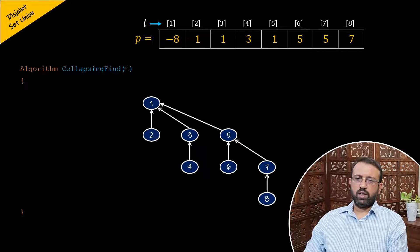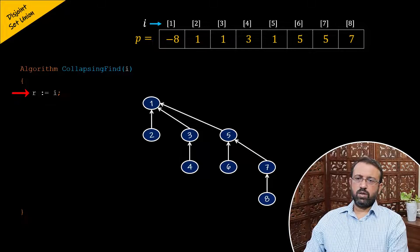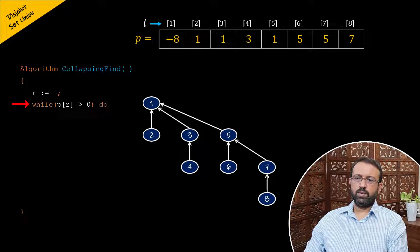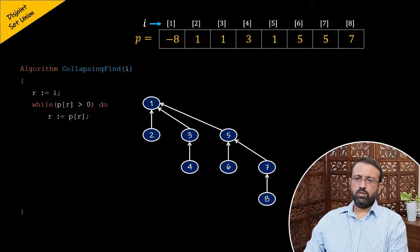Now let us look at the find algorithm using the collapsing rule, which we will call the collapsing find algorithm. It takes the same parameter as the simple find algorithm, parameter i, where i is the element or node of the tree. Within the algorithm, we have a variable r initialized to i, which will store the root of the tree. Then we have a while loop with the condition p of r greater than zero, and within the loop the statement r assigned p of r. This loop runs until p of r is negative, meaning we have reached the root, stored in r.